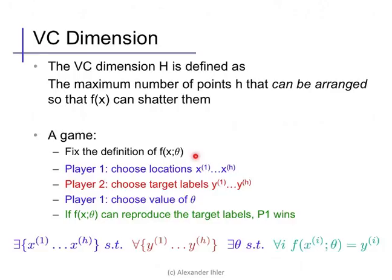So, player one gets to choose the locations of the feature space of the points x1 to xh. Then, player two chooses a label for each of them in an attempt to make them as hard to reproduce as possible. Player one then tries to pick a value for the parameters of the learner that will actually reproduce that target labeling. If player one succeeds, then the points can be shattered and the VC dimension is at least h. If player one fails, then the VC dimension must be less than h.